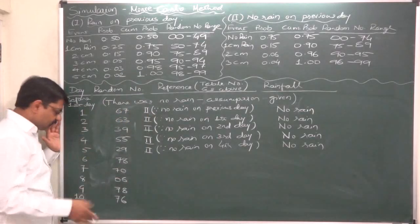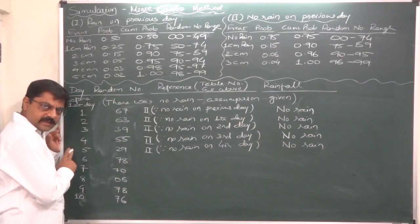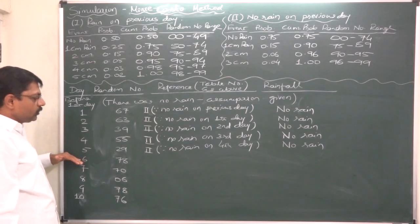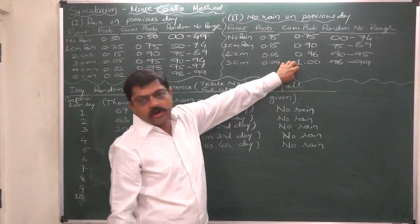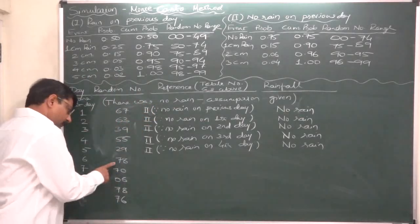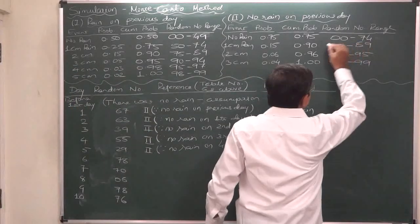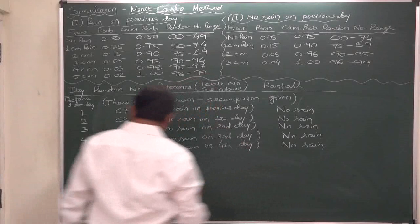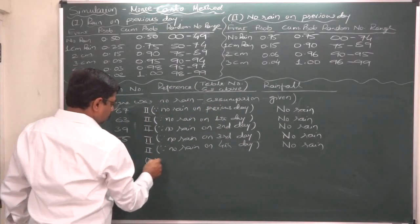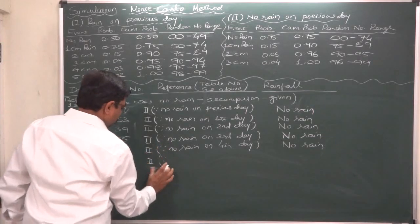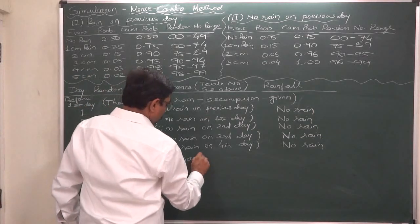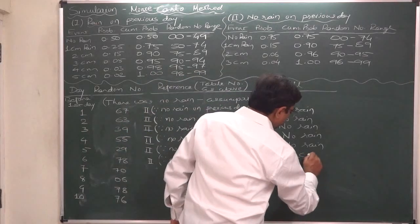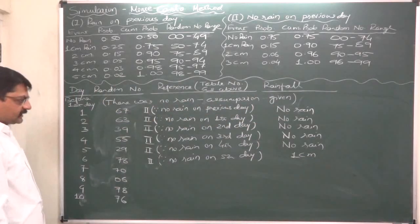For day 6, there was no rain on the previous day (day 5), so we again select distribution 2. Random number is 78, which falls in range 75–89. This range indicates a possibility of 1 centimeter of rain. So 1 centimeter of rain is forecast for day 6.